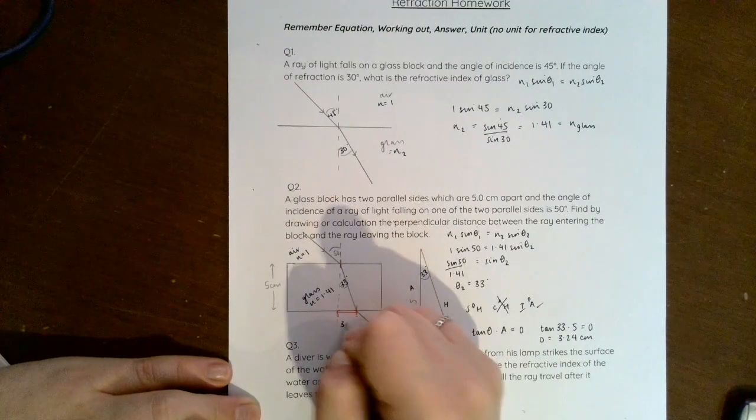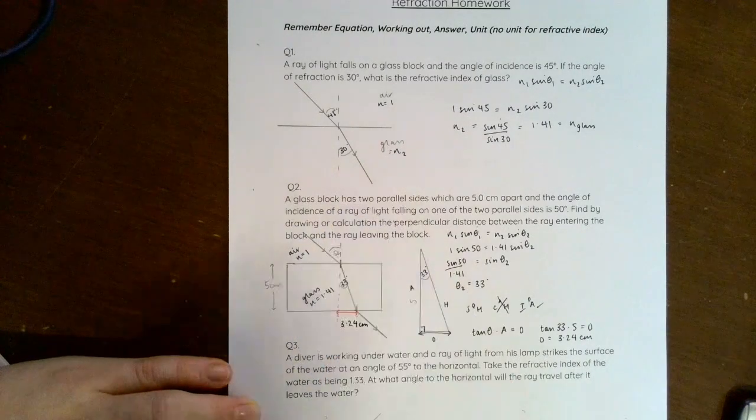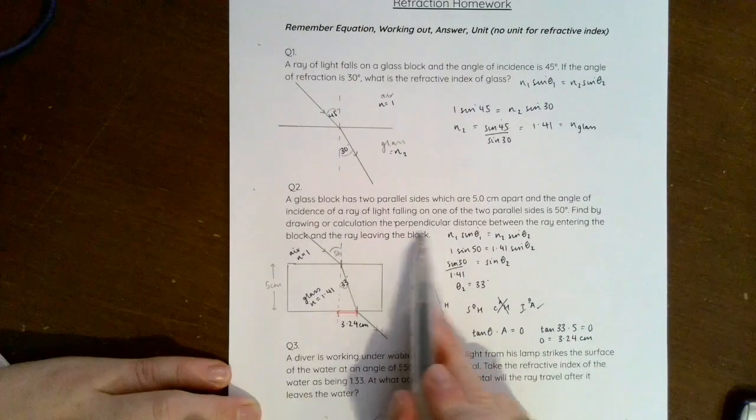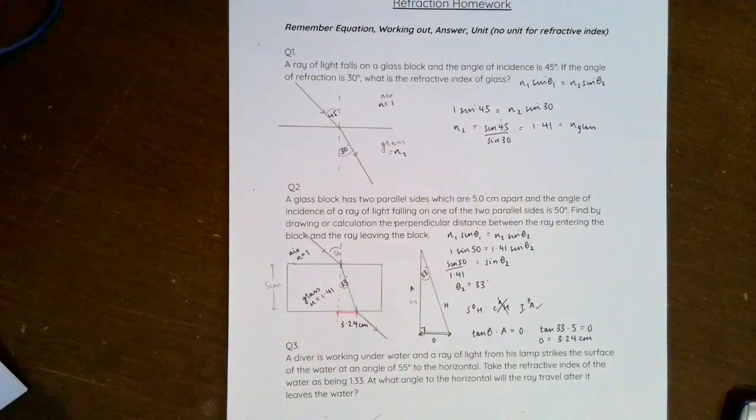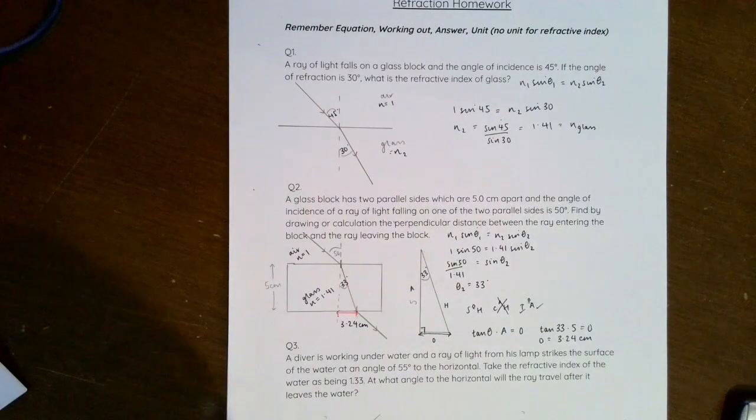So what that means is this length here is 3.24 cm, which is the same as this one, and therefore that is the length of the perpendicular distance between the ray entering and leaving the block. So that's question 2.